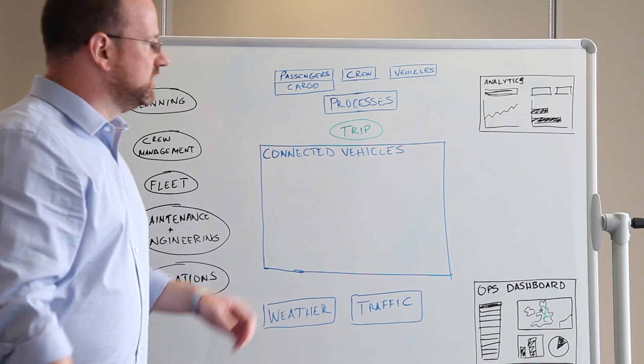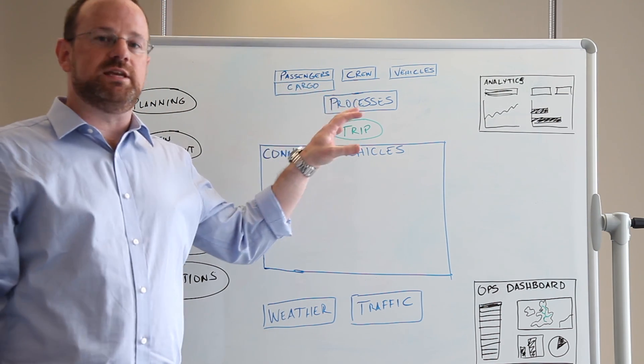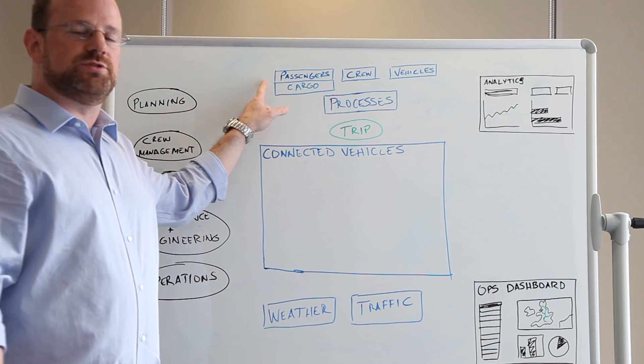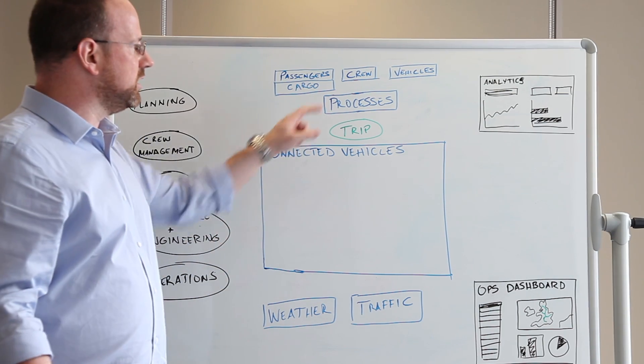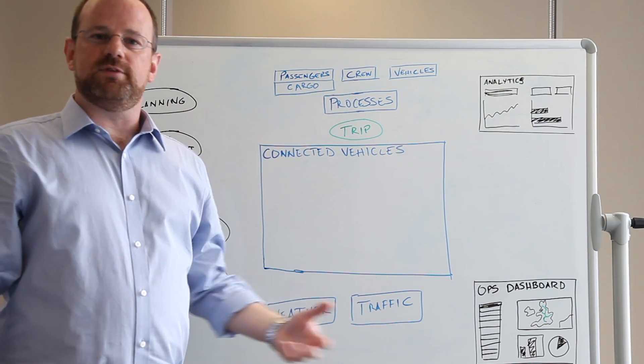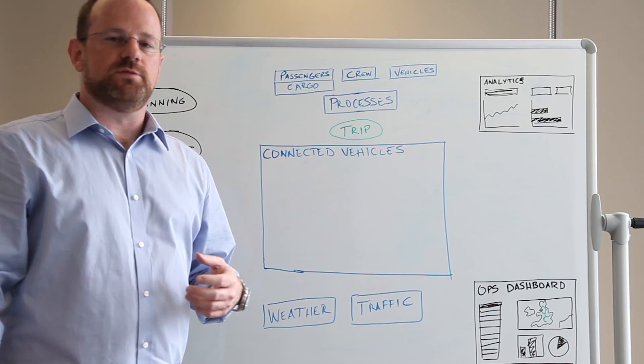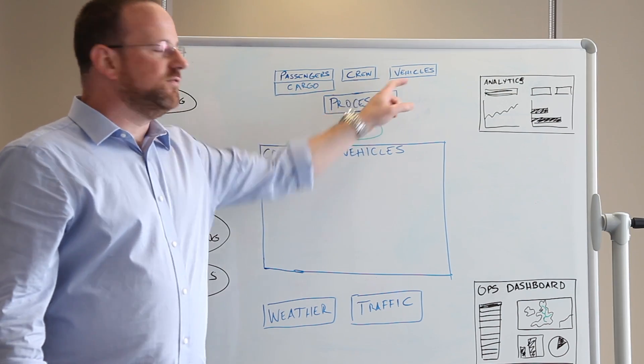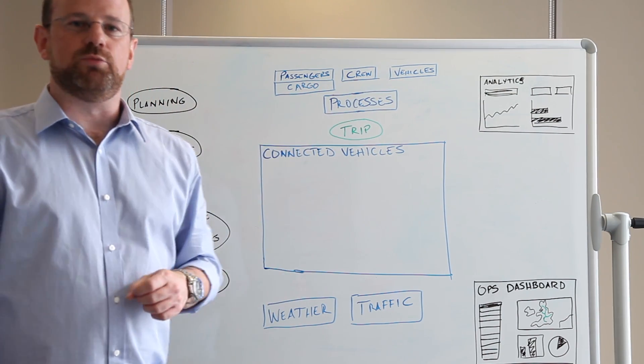In general, transportation logistics are interested in tracking three key resources. You have passengers and cargo, depending on the type of industry you're in. You have the crew who operate the vehicles or might be the crew that helps service the vehicles on the ground. And you have the vehicles themselves that do the journeys from point to point.